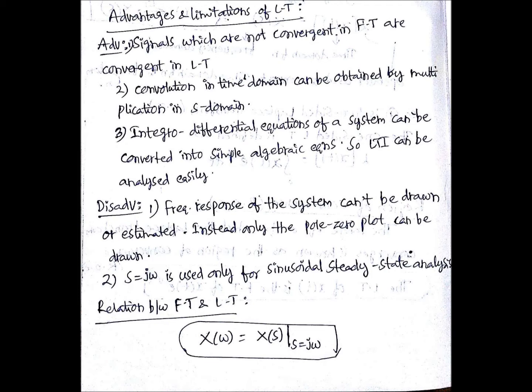Signals which are not convergent in Fourier transform are convergent in Laplace transform, which is nothing but disadvantages in case of Fourier transform. So the convolution in time domain can be obtained by multiplication in S-domain, that is a major application.